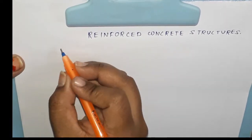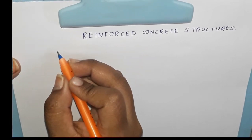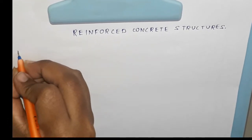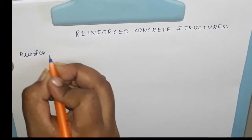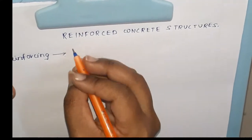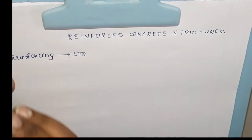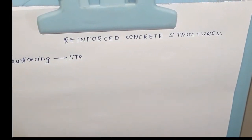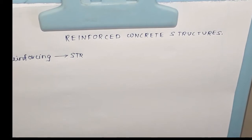Welcome to our channel. I am going to discuss few topics in Reinforced Concrete Structures, which we are usually going to call as RCS. First let us know the meaning of Reinforcing. Reinforcing means strengthening the capability of any material by the addition of another material — that process we are going to call Reinforcing.